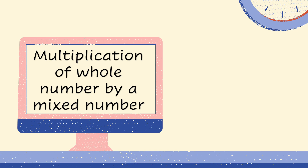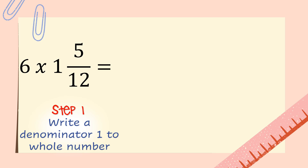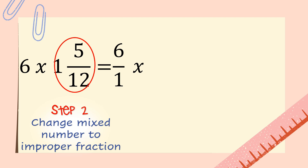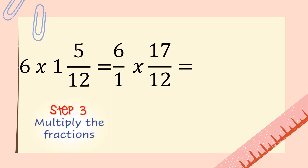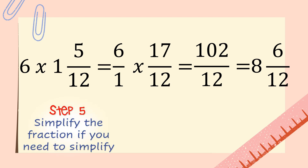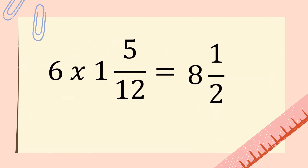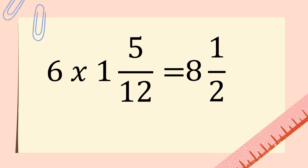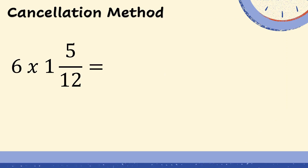Multiplication of whole number by a mixed number: six times one and five-twelfths. First, write a denominator of one under the whole number. Next, change the mixed number to an improper fraction. Third, multiply the fractions. Then change the improper fraction to a mixed number. Since we have an answer of eight and six-twelfths, we can simplify the fraction to its lowest term, which is eight and one-half.